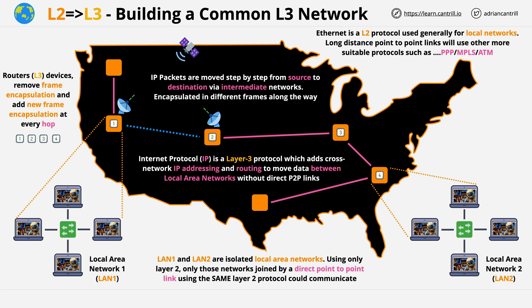The difference is that with frames, both the source and destination are generally local. With an IP packet, the destination and source addresses could be on opposite sides of the planet.